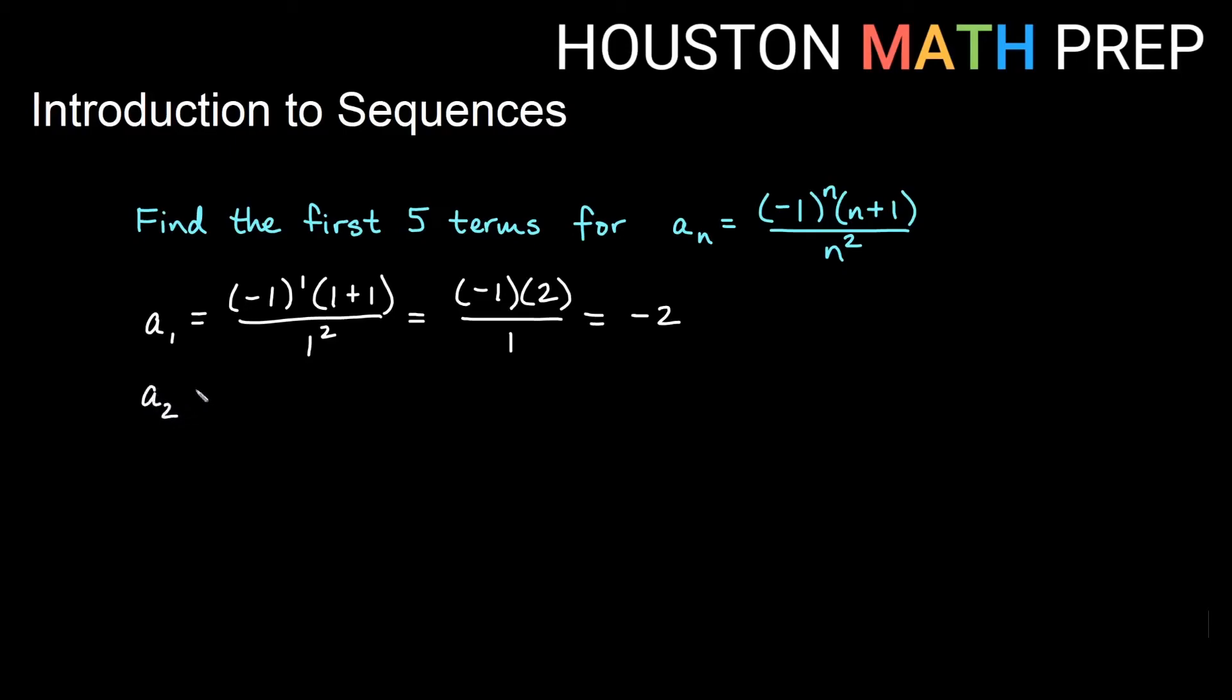Our second term, which would be a sub 2, will be negative 1 to the n now becomes negative 1 squared. My n plus 1 quantity becomes 2 plus 1, and then my n squared on the bottom now becomes 2 squared. Negative 1 squared is going to give me a positive 1, 2 plus 1 will give me 3, and we'll get 2 times 2 on the bottom, which is 4. So our second term for this sequence would be 3 fourths.